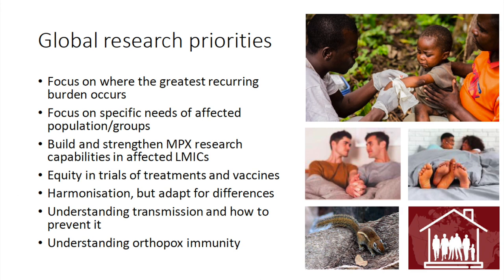Most importantly, we really need to understand transmission better — both the spillovers from animal reservoirs, but also human-to-human in different settings, and how immunity from natural infection or vaccination protects people and how it wanes over time.